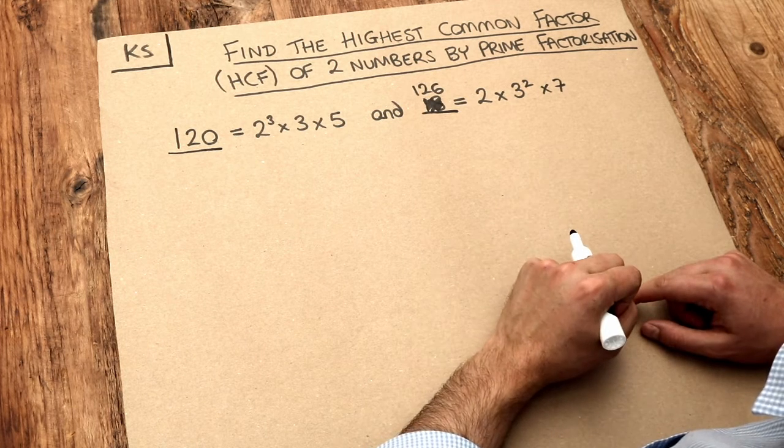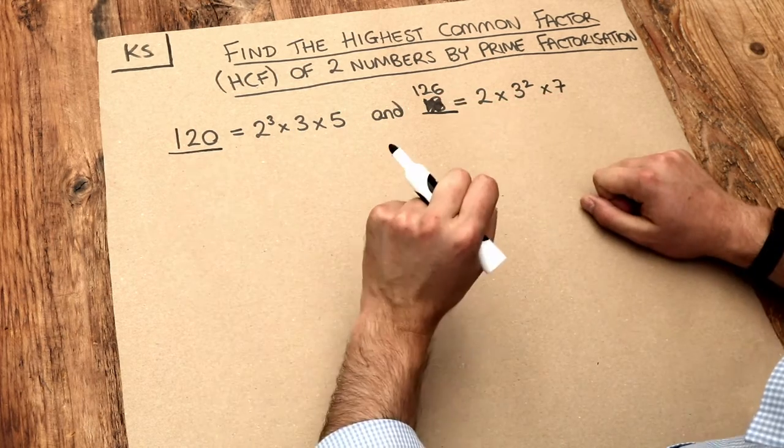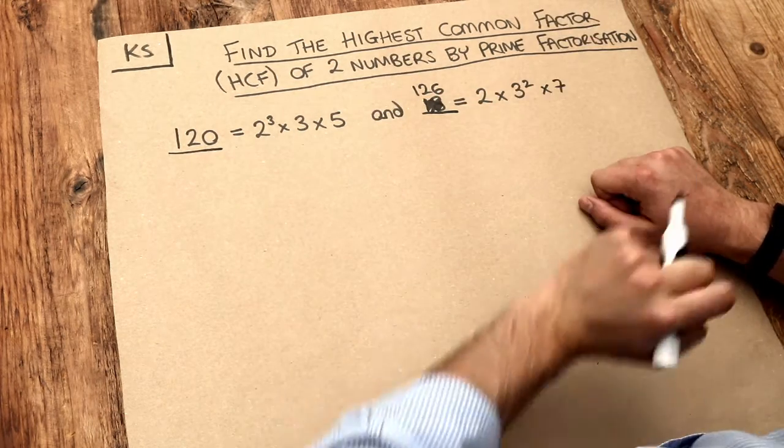Now in a previous video we looked at a method where we just listed the factors of each of these numbers and then chose the factor which was in both lists that was highest up the list.